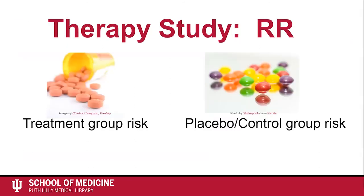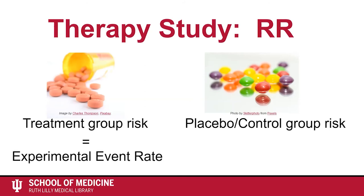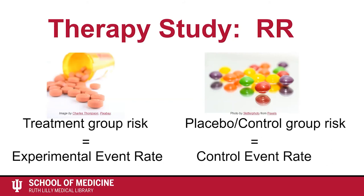In a therapy study, we might compare the risks in two groups of people, such as a treatment group compared to a placebo or control group, in order to determine the relative risk. Often we refer to the treatment group risk as the experimental event rate, and we refer to the placebo or control group as the control event rate. Now let's calculate the relative risk.